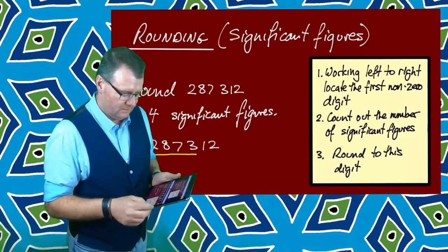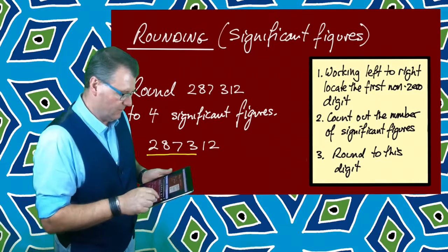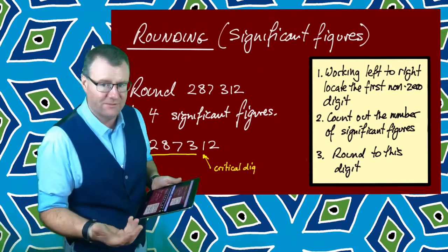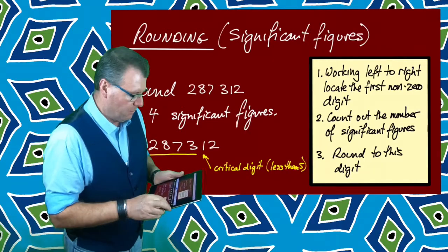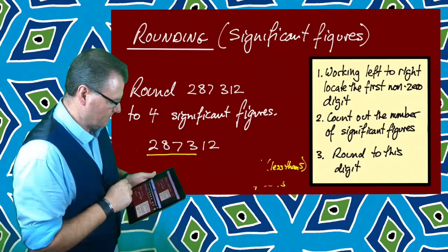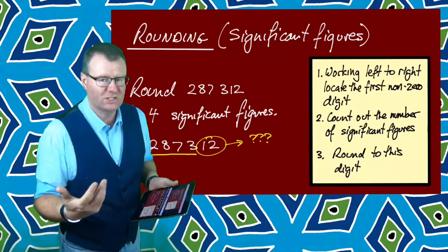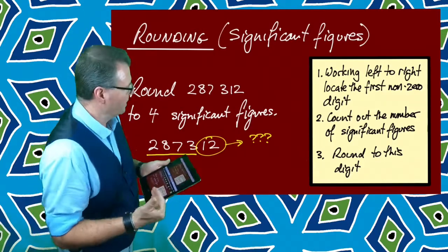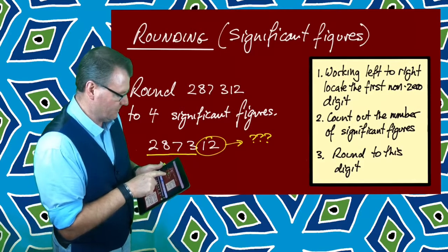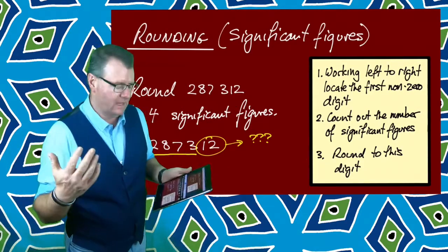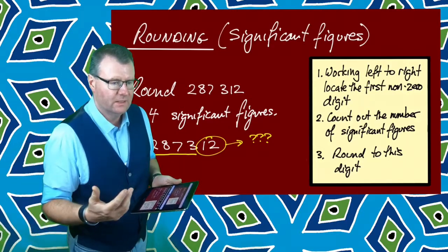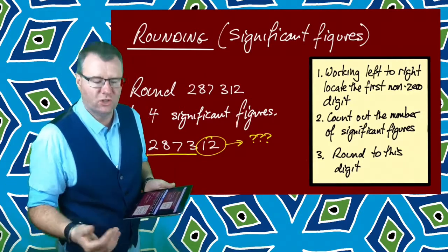Now I look at the next digit. Do I round this up or leave it? Well the critical digit is less than five, so I'm going to leave it as is. But what happens to these numbers? I can't just chop them off because two thousand eight hundred and seventy three is nothing like two hundred and eighty seven thousand. It's out by a massive amount. So instead of chopping them off, I just turn them into zeros.